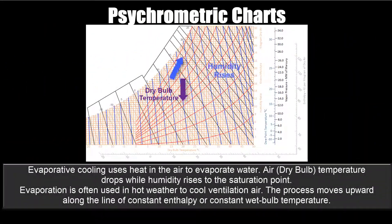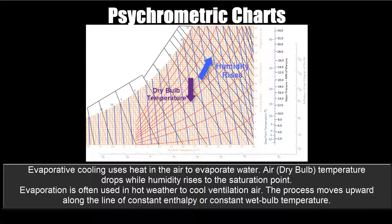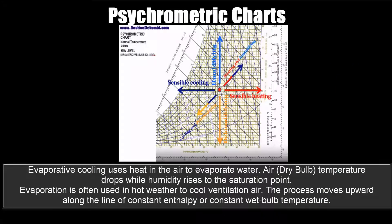Evaporative cooling uses heat in the air to evaporate water. Dry bulb temperature drops, while humidity rises to the saturation point. Evaporation is often used in hot weather to cool ventilation air. The process moves upward along the line of constant enthalpy, or constant wet bulb temperature.